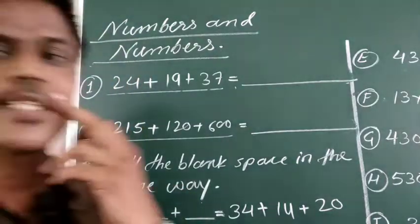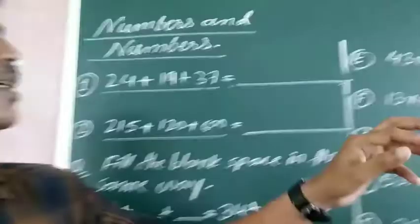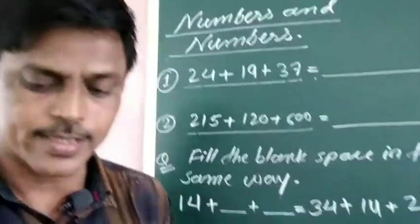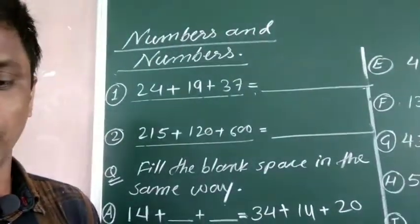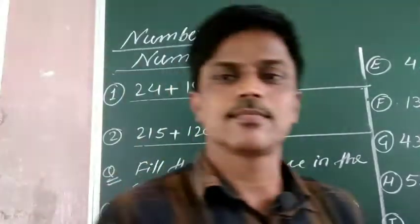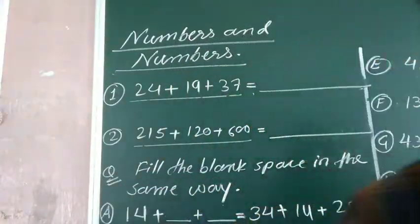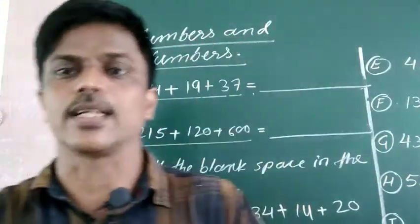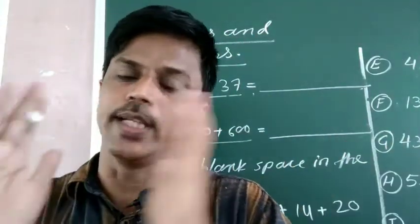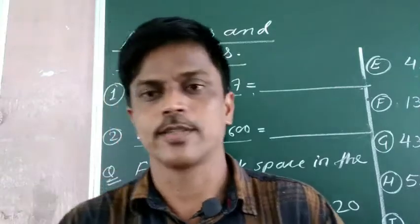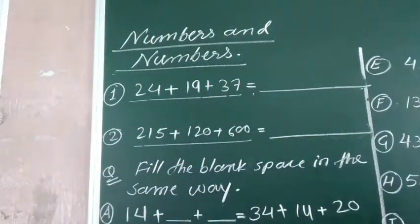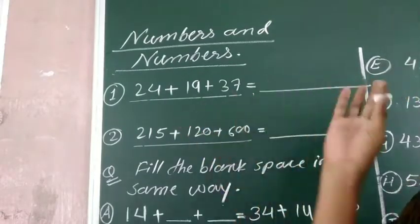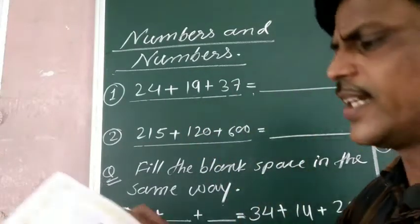Hello friends, in today's class it is Chapter 7 again. Can you see the patterns? In the last class we learned about the patterns of hexagons and magic squares, where we learned about numbers given in circles and their relation with numbers given in square boxes. Now in today's class it is about numbers and number patterns.